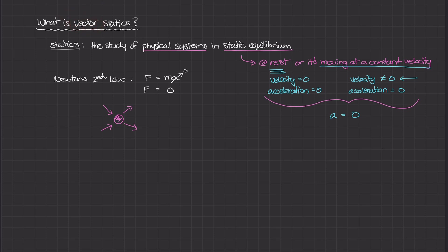Vectors are mathematical quantities that have both a magnitude and a direction, and they are paramount in studying vector statics. We need to understand that all forces on an object sum to zero, and in order to study the physical system, we need to know the directions of all those forces so we can break them into components, analyze them, and figure out what is actually happening to the object.